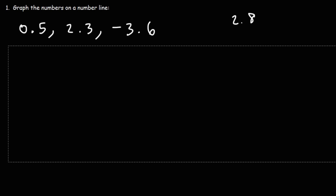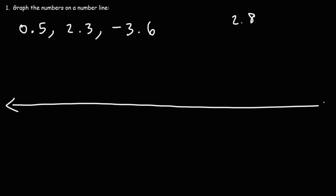Now let's plot negative 3.6. That's going to be to the left of 0 because we're dealing with a negative number. So negative 3.6 is somewhere between negative 3 and negative 4. Since this number runs to the tenths place, let's put 9 lines to get 10 equal spaces between negative 3 and negative 4. Counting: negative 3.1, 3.2, 3.3, 3.4, 3.5, 3.6, 3.7, 3.8, 3.9, and then 4. So negative 3.6 is going to be right here.